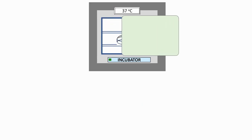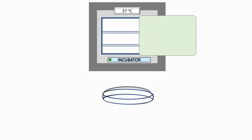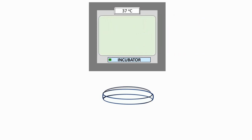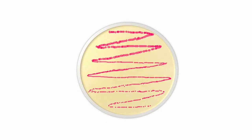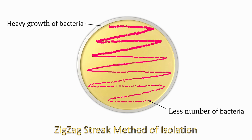After incubation, remove the plate from the incubator and check for the growth of bacteria on the agar plate. You can observe heavy growth in upper streaks whereas growth thins out in downward streaks, but there are very few isolated colonies.